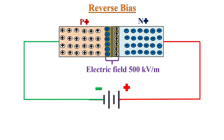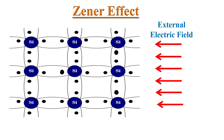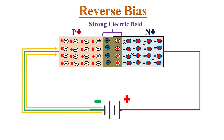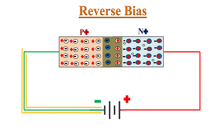Due to this thinner depletion region, the electric field strength across the depletion layer is quite high. If the reverse voltage is continued to increase, after a certain applied voltage the electrons from the covalent bonds within the depletion region come out. So many charge carriers are generated that the depletion region becomes conductive. Due to the strong electric field and narrow depletion region, charge carriers can tunnel through it and reach the other side — in this way a lot of current suddenly starts flowing in the reverse direction.